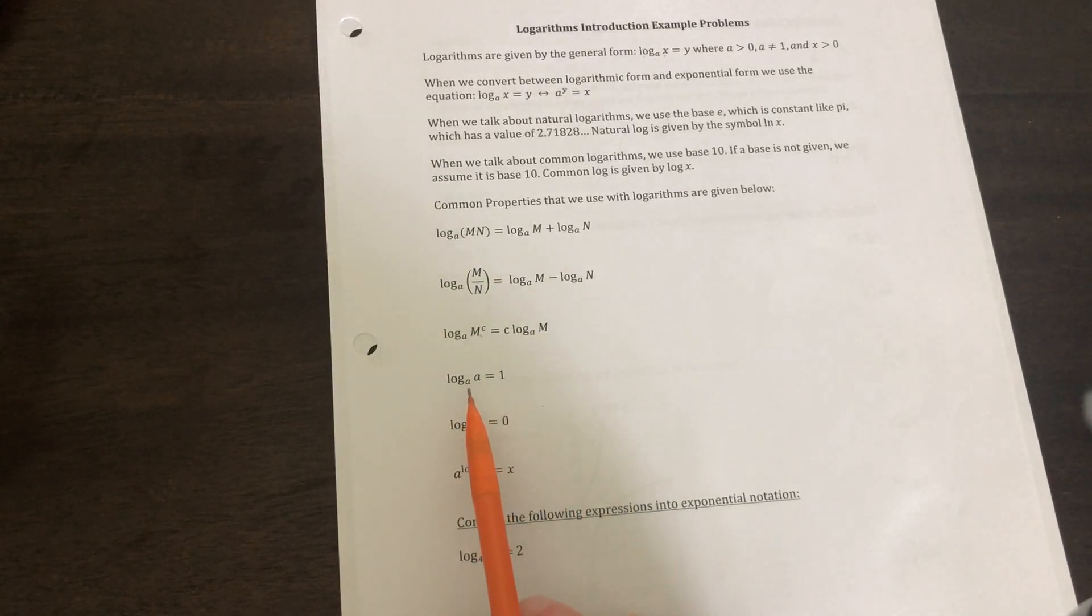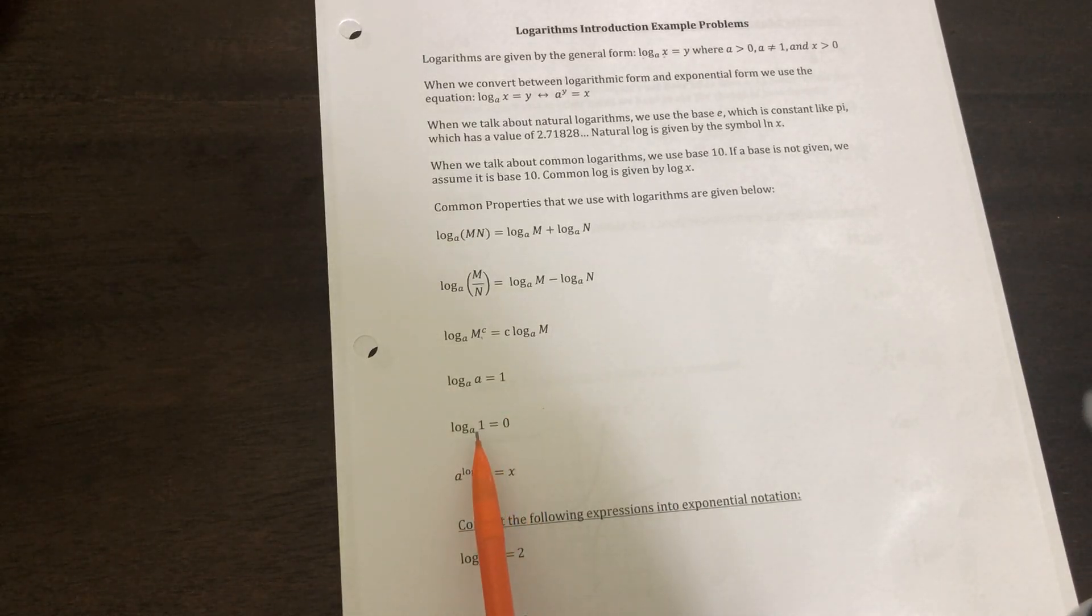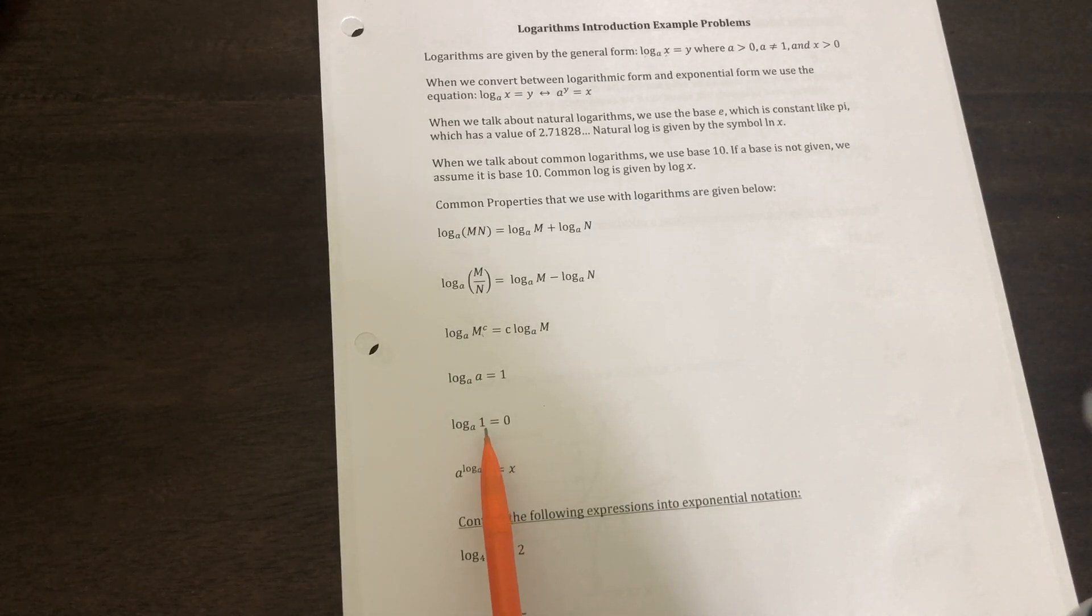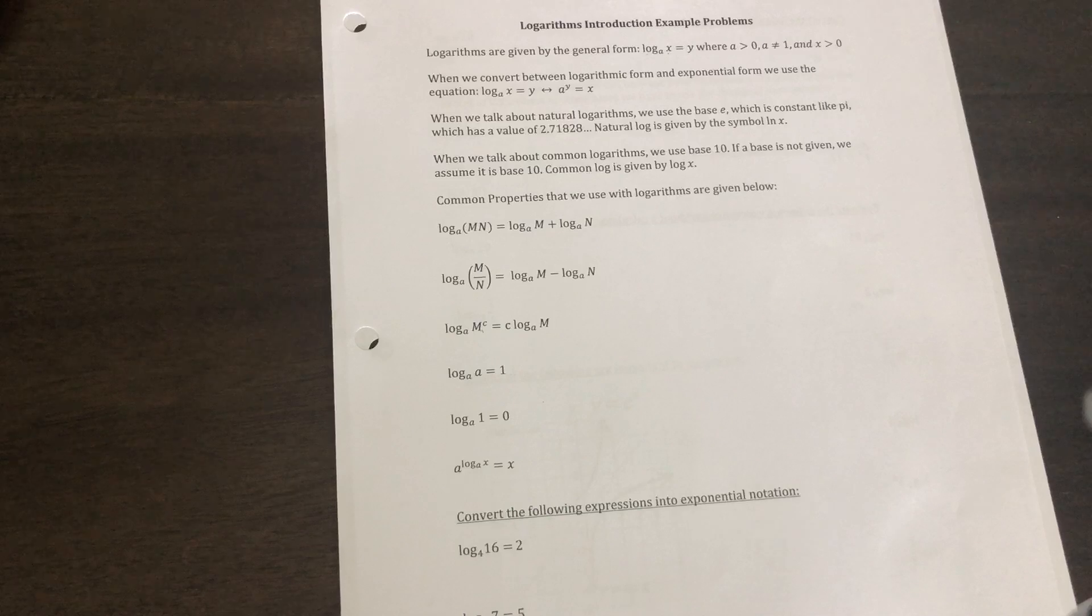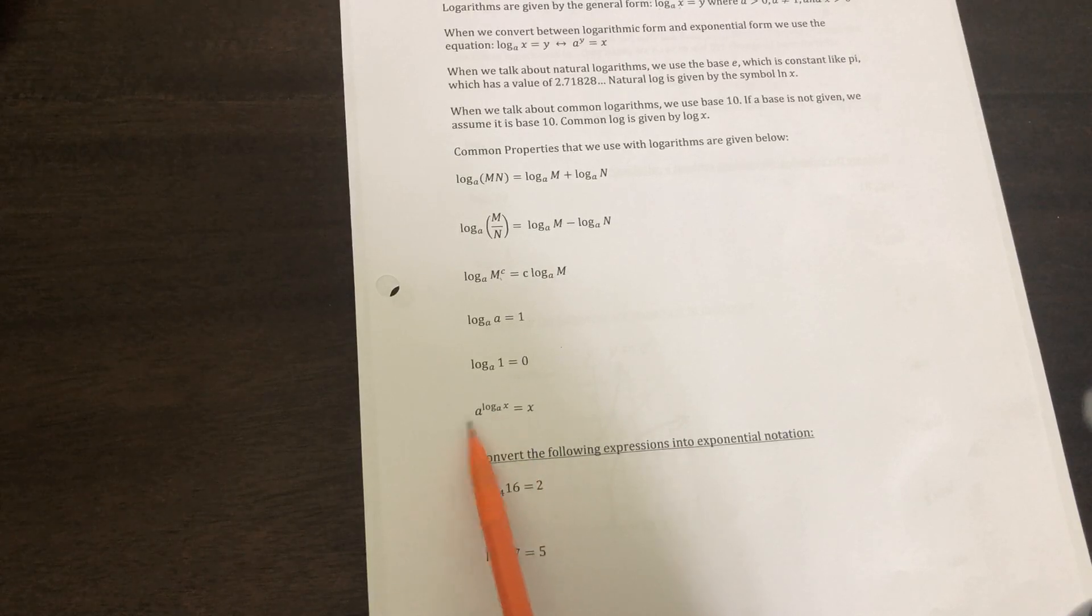Log a of a, if the base and the argument match each other, it's one. Because a to the one power is equal to a. Same thing here, a to the zero power is equal to one. Anything to the zero power is equal to one. And then this one, a log a, anytime the bases match up and log like that, this cancels and you're just left with what's the argument.